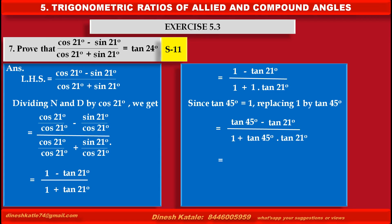By using the formula tan A minus tan B upon 1 plus tan A·tan B, which is equal to tan(A minus B), we get tan(45 minus 21), which is equal to tan24, which is the required right hand side.